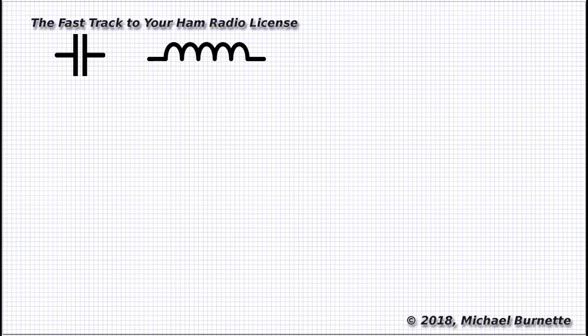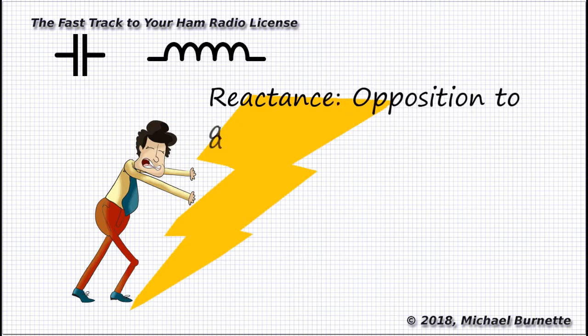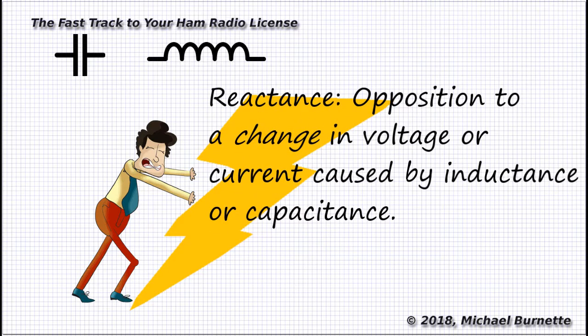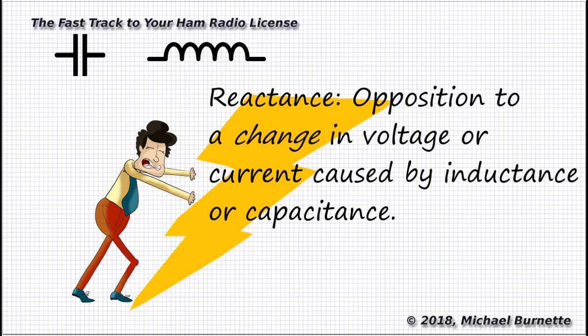Capacitors and inductors both oppose changes in alternating currents or voltages, and this opposition varies with the value of the component and with frequency. We call this opposition reactance, and in formulas it gets the letter X. It is measured in ohms.